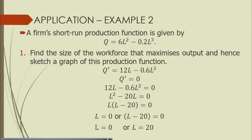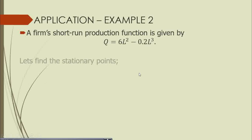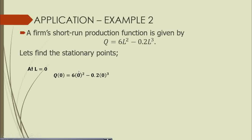It is now time to determine which of these two values maximizes output. Using the second order condition, let's first find the corresponding vertical axis coordinates. Substituting L = 0 into the production function: q = 6(0²) - 0.2(0³) = 0. So one stationary point is (0, 0).